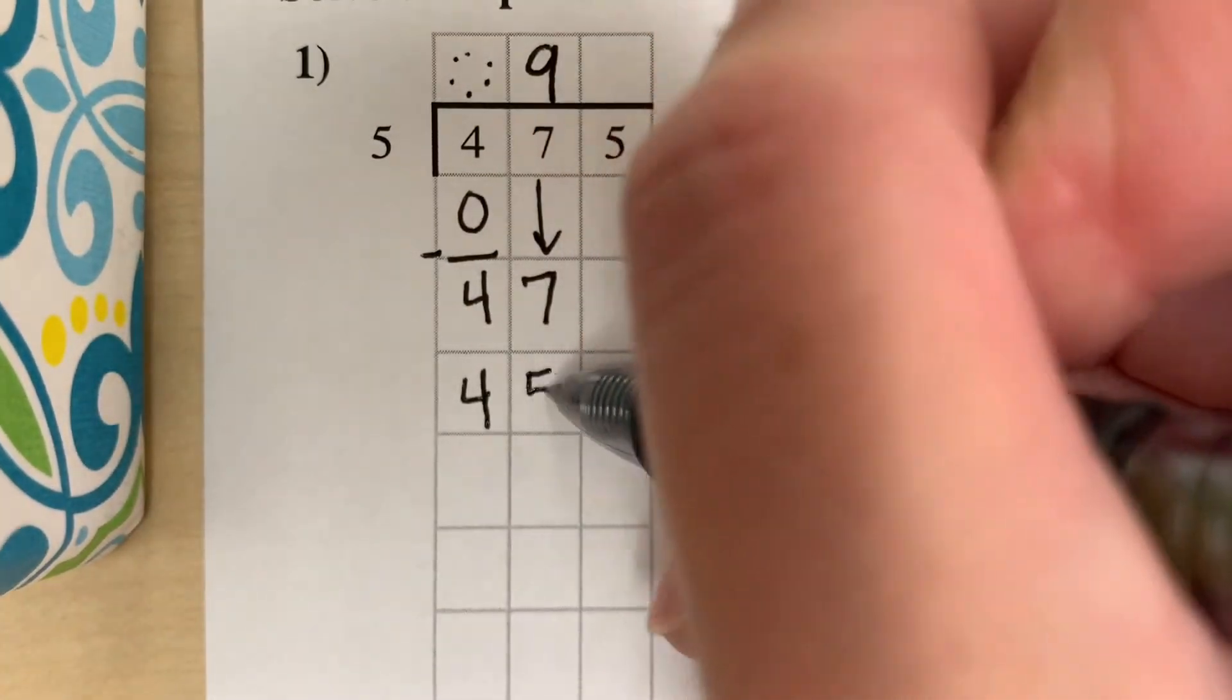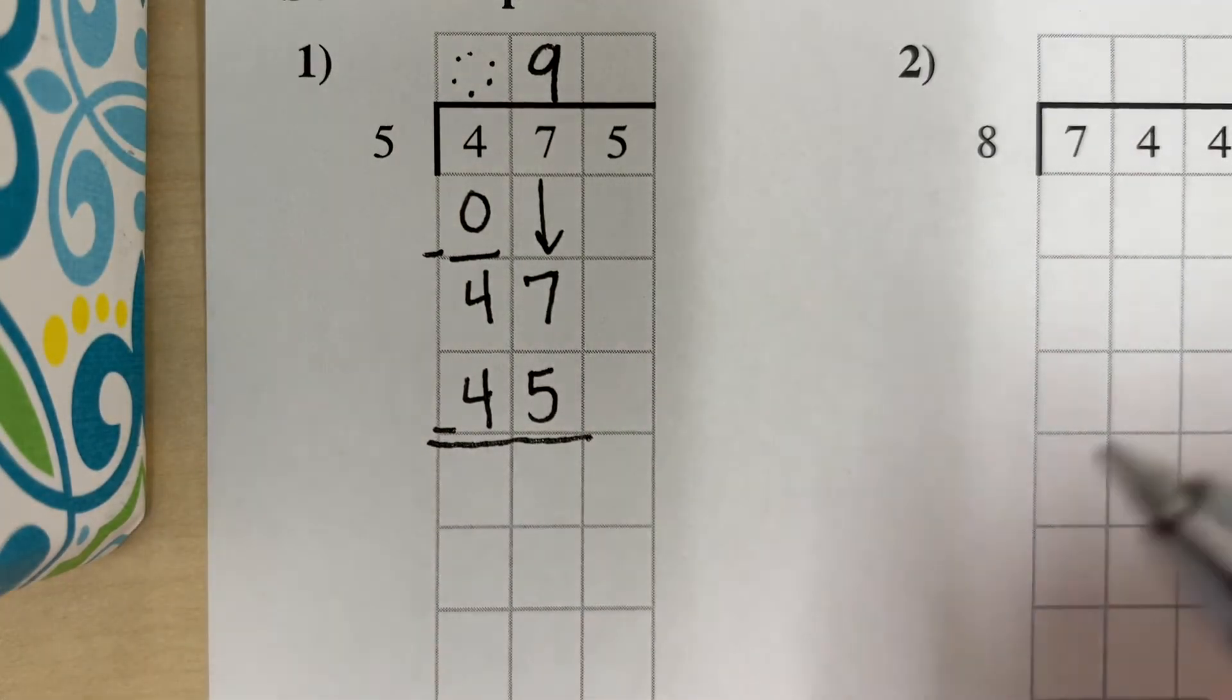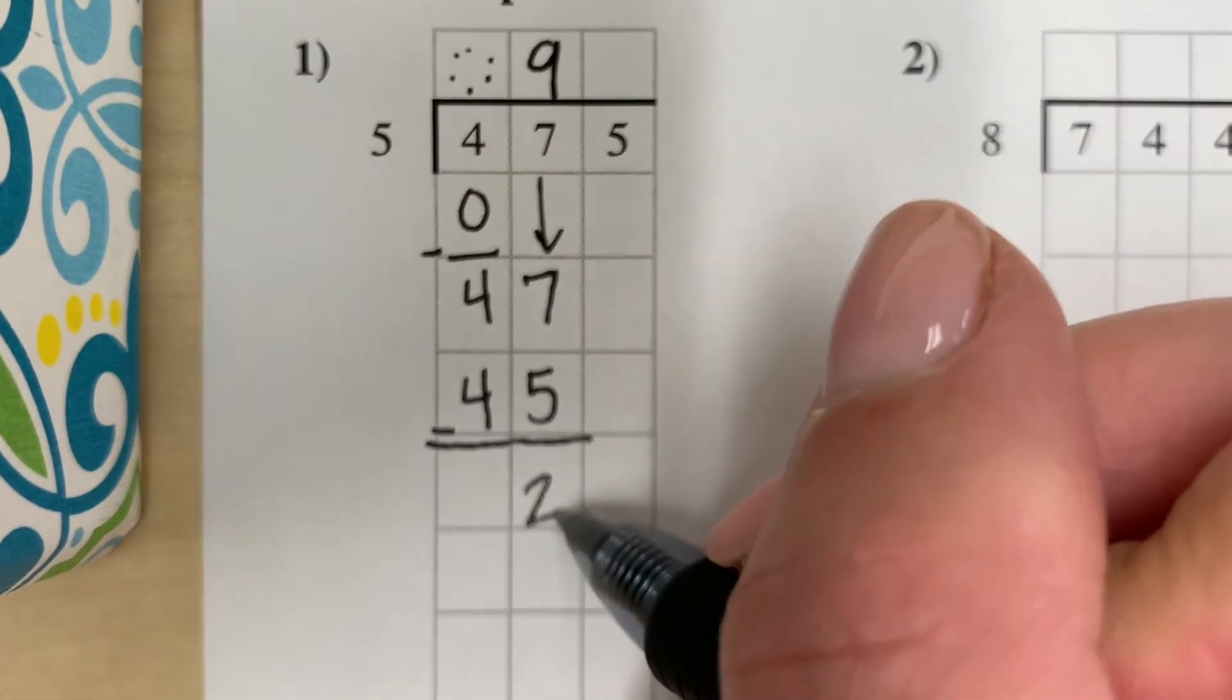We were able to use 45 out of those 47. Then we subtract. We definitely made 9 groups of 5, but we had 2 left over.